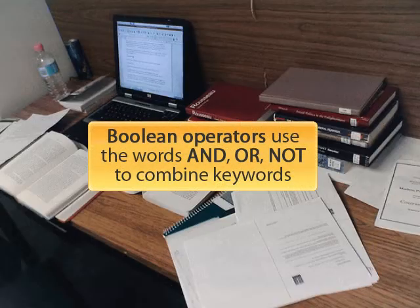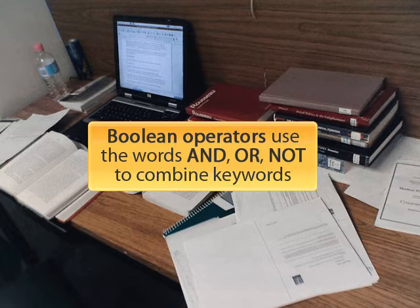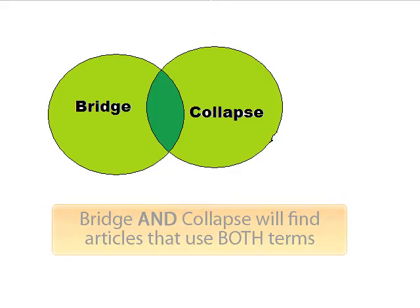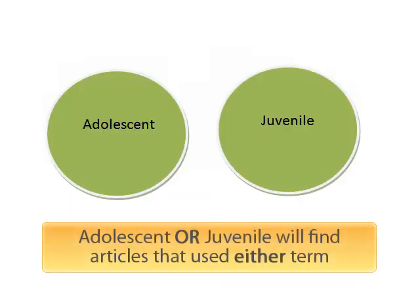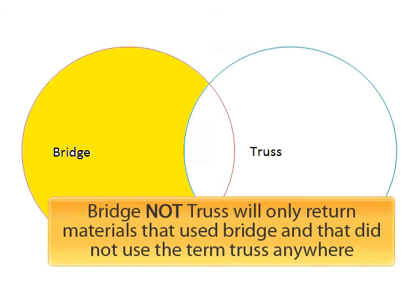Boolean operators use the words AND, OR, and NOT to combine keywords. For example, 'bridge AND collapse' will find articles that use both terms. 'Bridge NOT truss' will only return materials that used the word bridge and did not use the term truss anywhere.